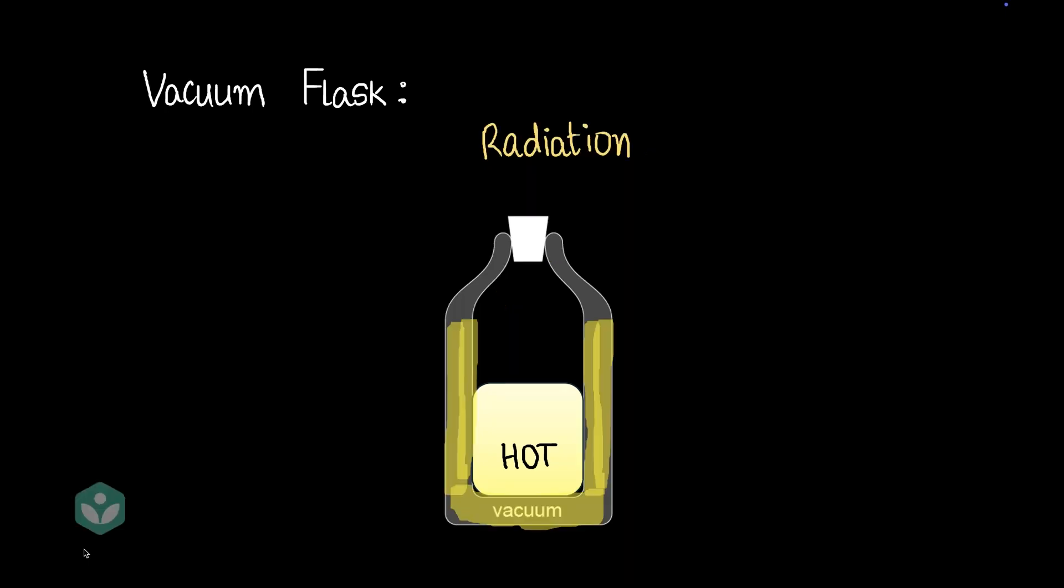What about radiation? Well, we know that every body that radiates is radiating some rays like these, right? The inner wall of the flask has a reflective surface. So any rays that exit the hot fluid get reflected and stay within the flask, because of which radiation also doesn't work.